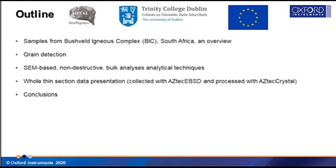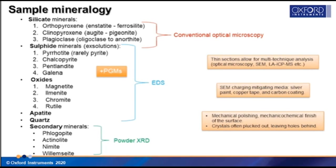Thank you Pat. I will start by talking about the mineralogy of samples from the Bushveld igneous complex in South Africa, then discuss grain detection in SEM-based analytical techniques and their application on thin sections of rocks, and finally present data from whole thin section scans and the advantages of whole thin section analysis to the mining industry. The Bushveld mineralogy is complex. Different techniques are employed to detect different mineral groups — for example, major mineral phases like pyroxenes and plagioclase were readily identified using optical microscopy, while sulfide species were reliably distinguished with EDS.